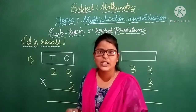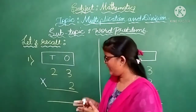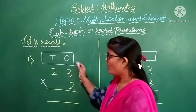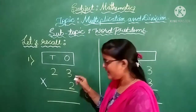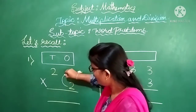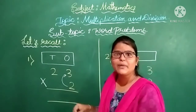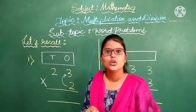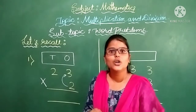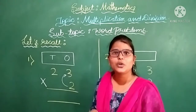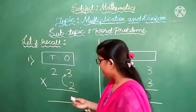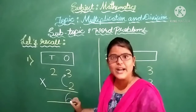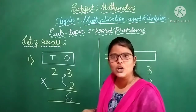How to do this problem? Listen carefully. First you have to multiply the 1s place digit first. 2 into 3. Now we remember the table of 2: 2 one is 2, 2 twos are 4, 2 threes are 6. Write down this 6 under the 1s column.